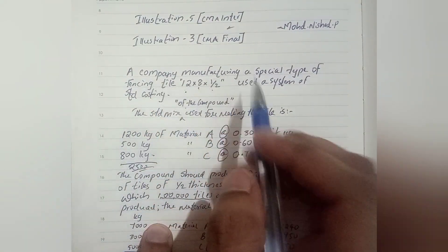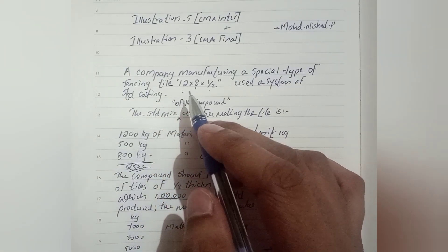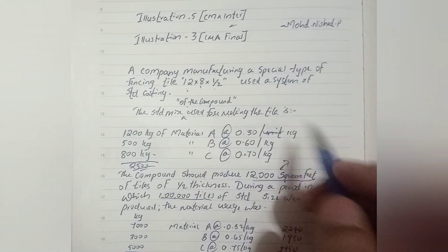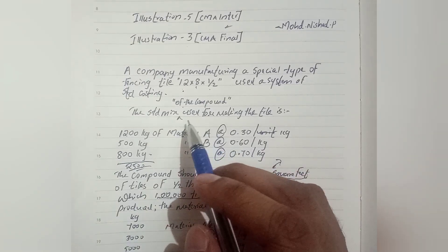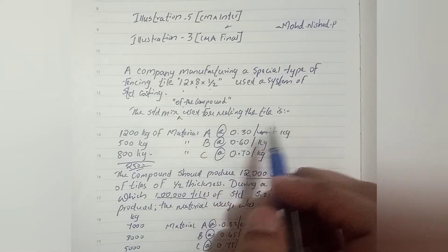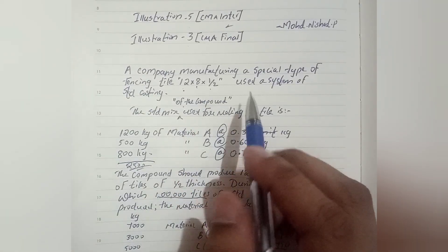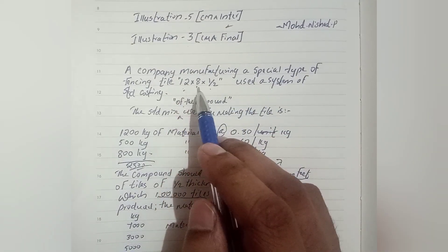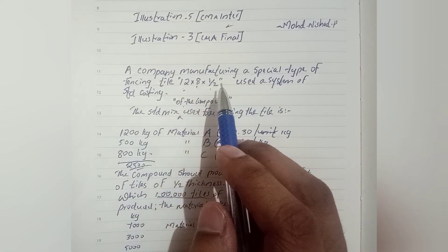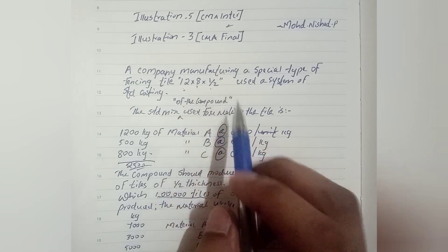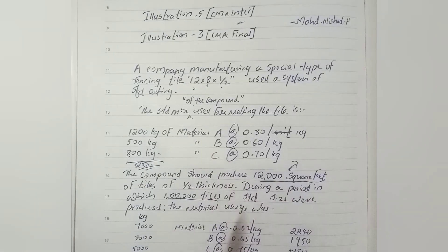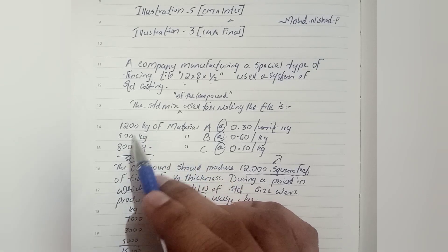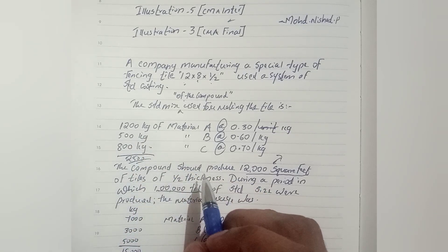A company manufacturing a special type of fencel tile 12x8x1/2 uses a system of standard costing. The standard mix of the compound used for making the tile — the tile has length, width, and height. The total is 250 kg of material.